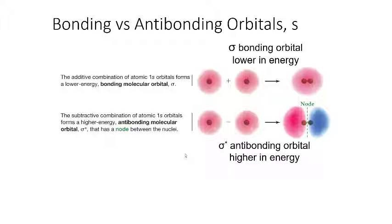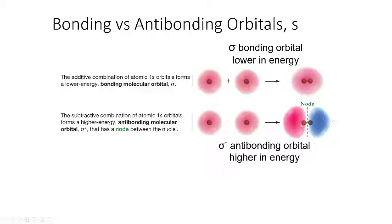When we combine and have direct overlap of two orbitals of the same phase, we get a sigma bond. Here we can see the overlap of two s-orbitals in the same phase adding together to form that sigma bond. But if we add together s-orbitals of opposite phase — subtracting two different orbitals — we get destructive interference, where there is a node, an area of zero probability of finding an electron, in between the two, with regions of space on either side.